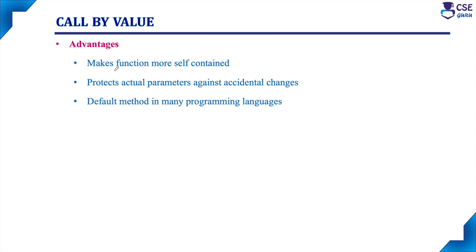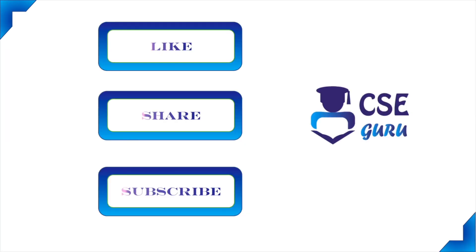The advantage of call by value technique is that it makes the function more self-contained. Since it does not affect the actual parameter values, it protects the actual parameter values against accidental changes in the formal parameter. This is a default method in many programming languages like C and C++. Thank you for watching this video.